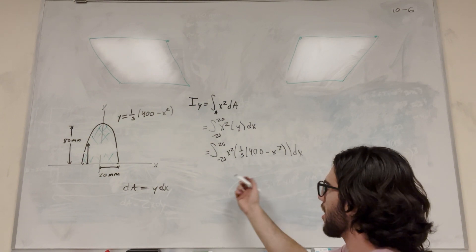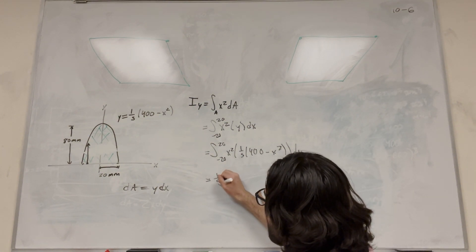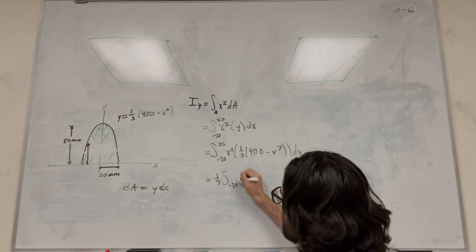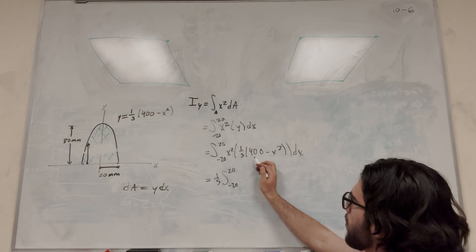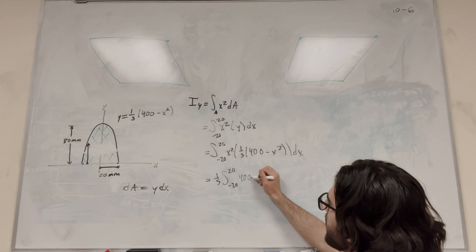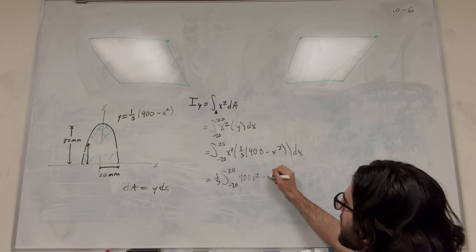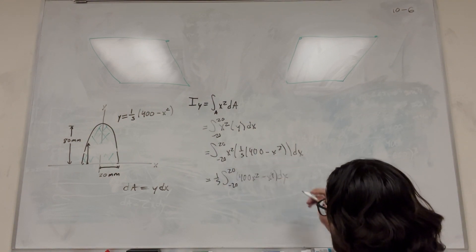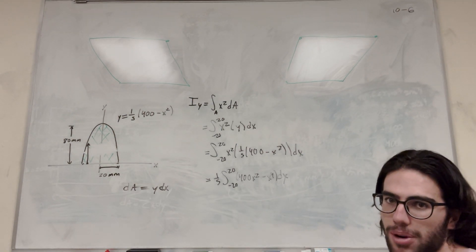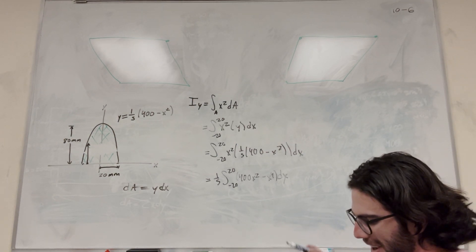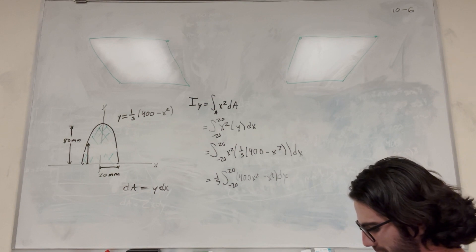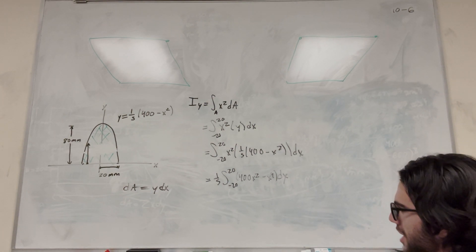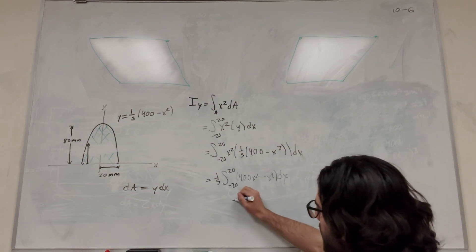So now we just need to simplify this. So let's bring out the one-fifth. So one-fifth, negative 20 to 20. So this x squared is going to become 400x squared, and then this is going to be minus x to the fourth. All of this times dx. All right, so we have this here, and let's just go ahead and integrate this. So this is pretty simple to integrate.